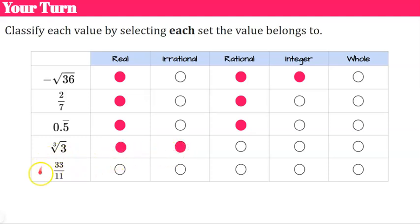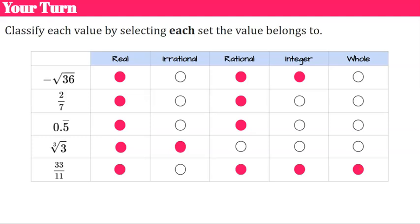33 over 11 simplifies to 3. Therefore it is real, rational, an integer, and a whole number because it is a positive value — positive 3.